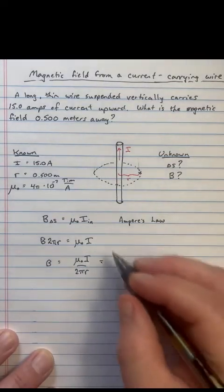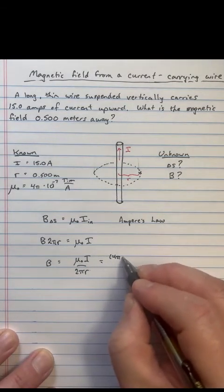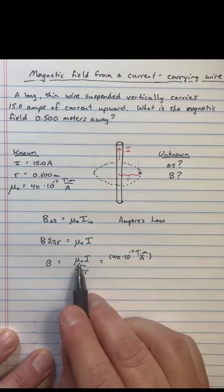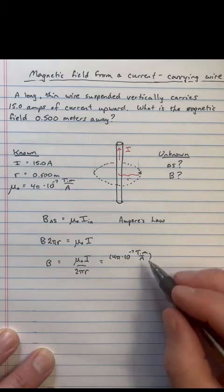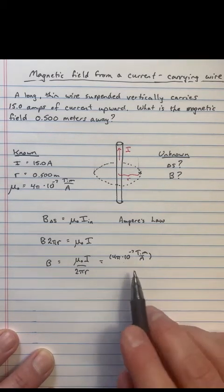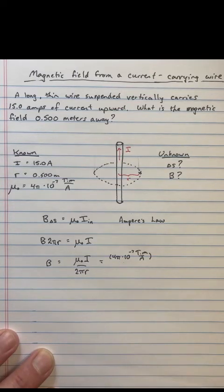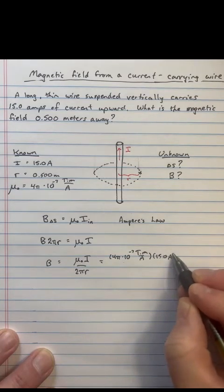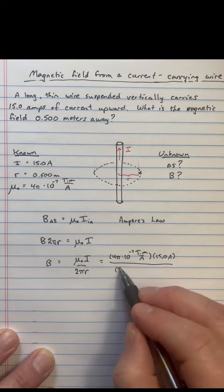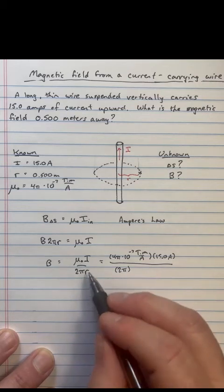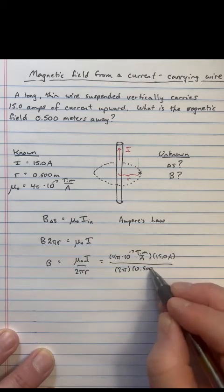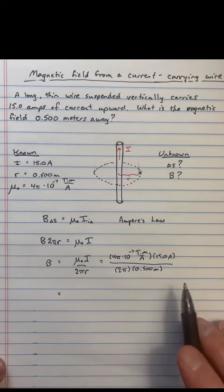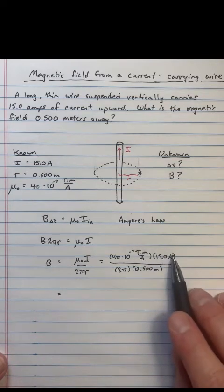Okay, plug in some numbers. Talked a lot today. Let's put in our numbers. So, 4 pi times 10 to the minus 7 tesla meters per amp for the units on mu naught. Notice, by the way, that I tend to, and a lot of your physics instructors will just keep it as 4 pi. Rather than multiply it out, you'll see why in just a moment. Current is 15 amps. We have a 2 pi here, and then r was half a meter.